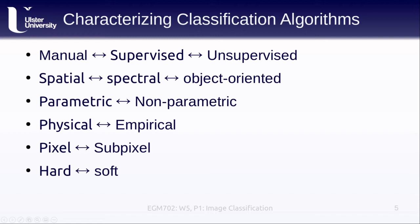Note that these are not mutually exclusive categories. The classification you did in EGM 713 was a supervised maximum likelihood classification, meaning it was both a supervised classification and also parametric, as the algorithm uses a parameterization of the training data to assign class values to each pixel. In this lesson, we'll talk more about supervised and unsupervised classification. In the next lesson, we'll talk about spectral and object-oriented classification, and we'll also cover parametric and non-parametric classifications.